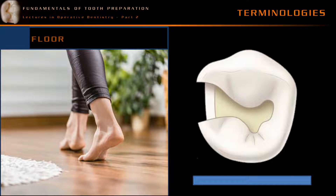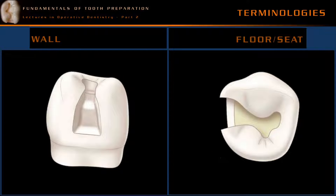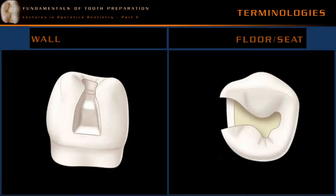A floor is a part of a tooth preparation which is perpendicular to the long axis of the tooth. There often exists confusion between the representation of wall, floor, and seat. A floor is often described as a wall also — for example, a pulpal floor is often described as a pulpal wall, and a gingival seat is often described as a gingival wall. So there is no clear-cut distinction between a wall, floor, and seat; they can be used synonymously.